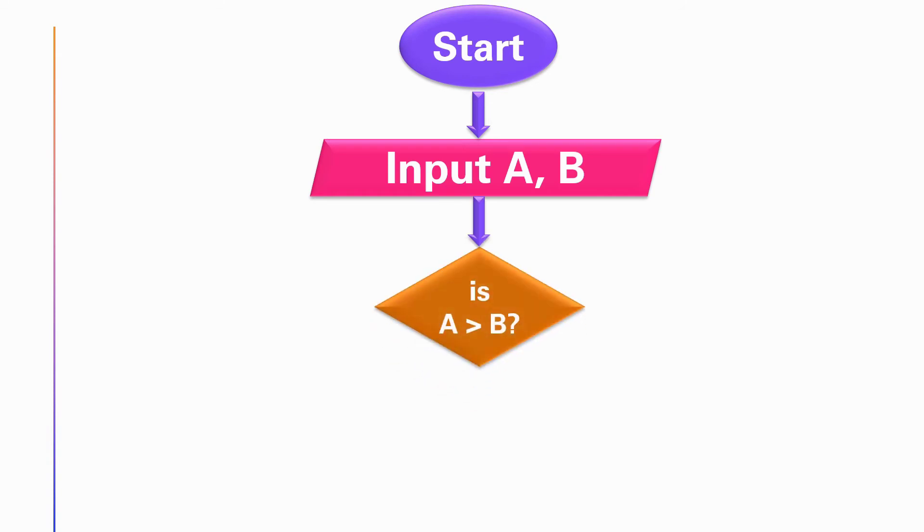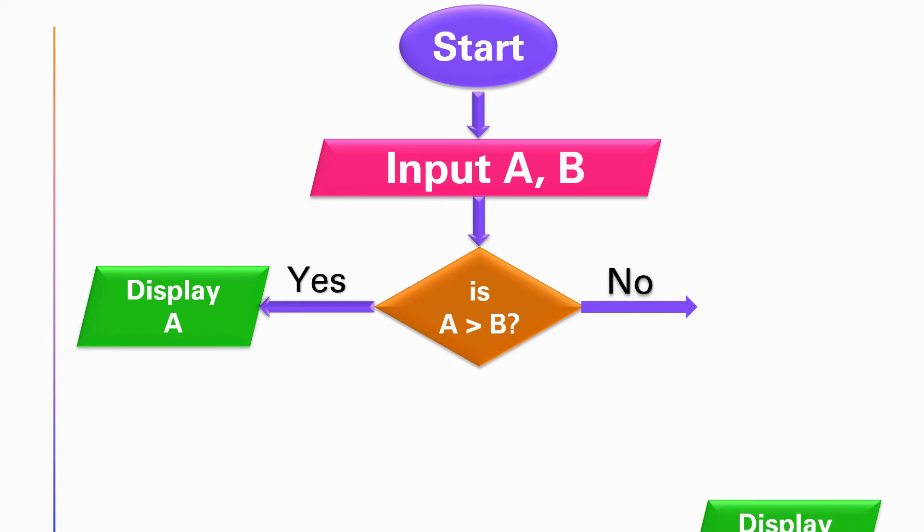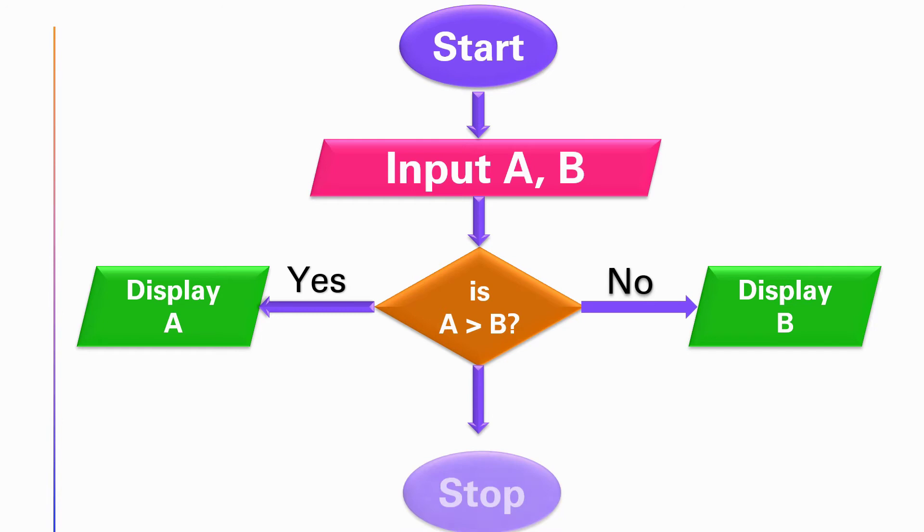Then I will add my input. Now comes the decision box. So I have two decisions here: if A is greater than B, I should display A. If A is smaller than B, I should display B. Now I should finish my flowchart.